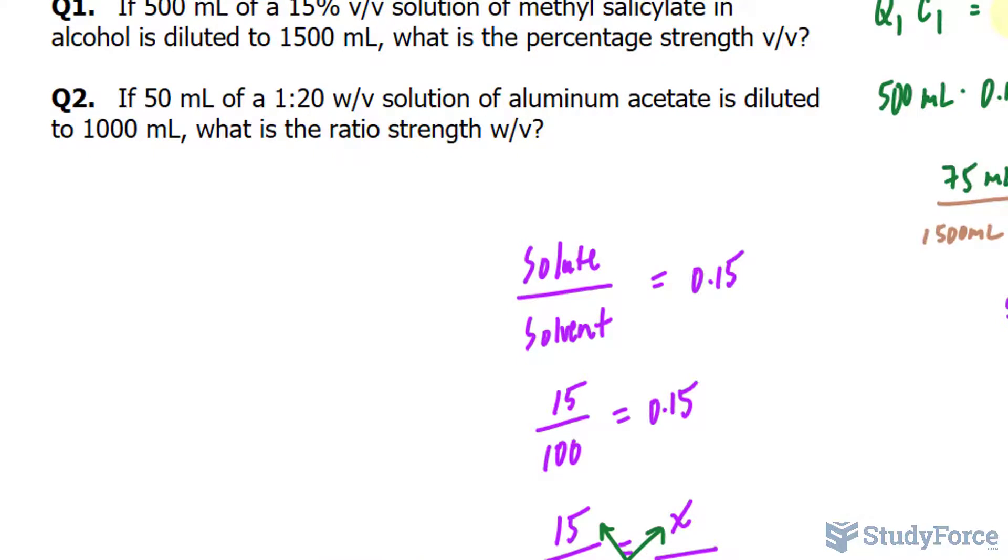Let's apply this idea to question two. If 50 milliliters of a 1 to 20 weight per volume solution of aluminum acetate is diluted to 1000 milliliters, what is the ratio strength, weight per volume? So this time we know a particular weight or mass of the solute, and it was applied to a volume of solvent. That's how to interpret this weight per volume expression here.